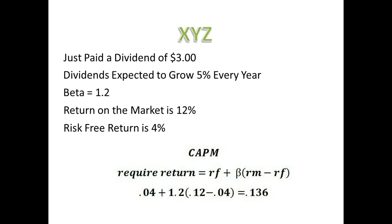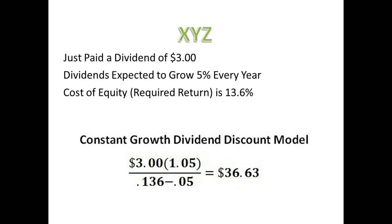The Capital Asset Pricing Model gives us a discount rate of 13.6%. We did this by plugging in our assumptions: a risk-free rate of 4%, and then we added that to the beta of 1.2 times the difference of the return on the market and the risk-free rate. We then plugged in our assumptions to the Constant Growth Dividend Discount Model, and our stock is worth $36.63.